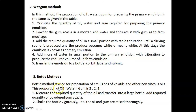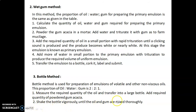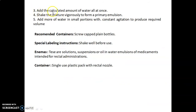The bottle method is used for preparation of emulsions of volatile and other non-viscous oils. The proportion of oil to water to gum is 2:2:1. Measure the required quantity of oil and transfer it into a large bottle, add the required quantity of powdered gum acacia, and shake vigorously until the oil and gum are mixed thoroughly. Add the calculated amount of water all at once, then shake vigorously to form a primary emulsion. Add more water in small portions with constant agitation to produce the required volume. Recommended containers are screw-capped plain bottles; special labeling instruction: shake well before use.